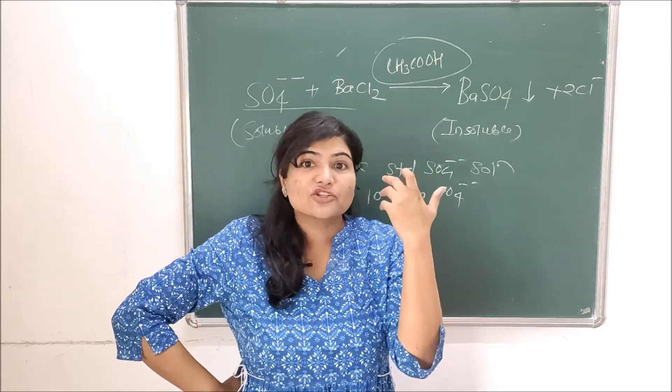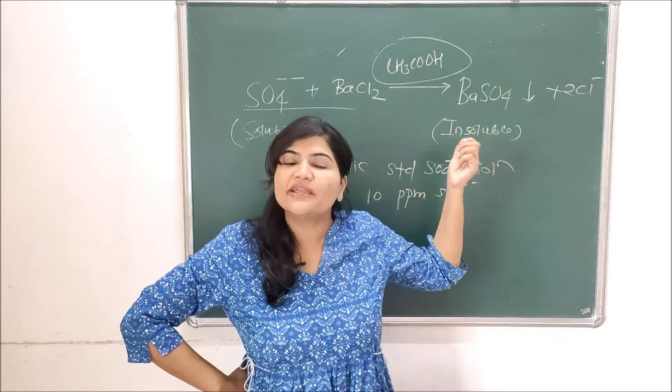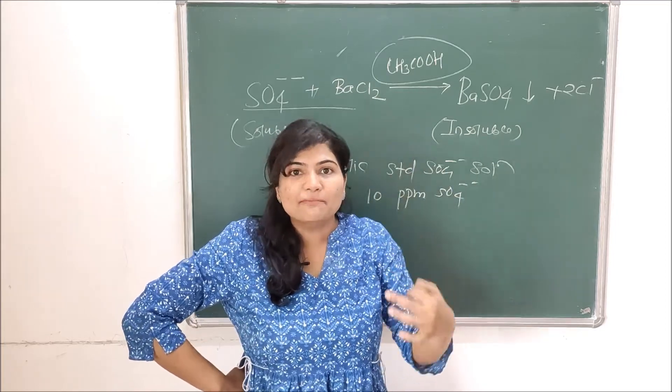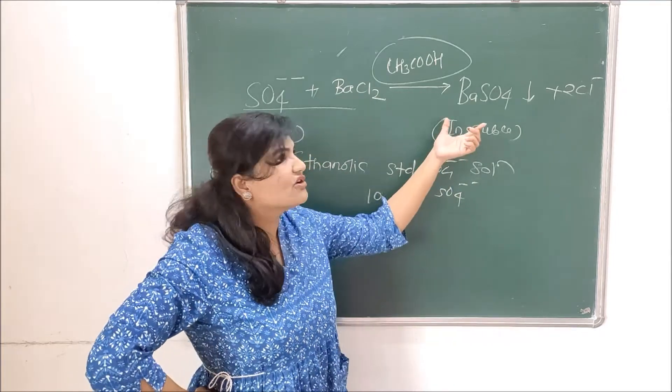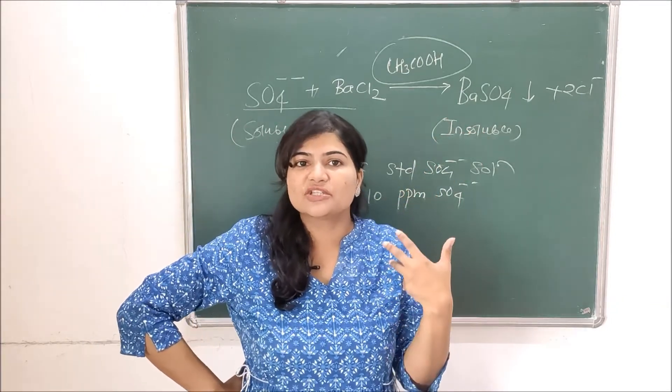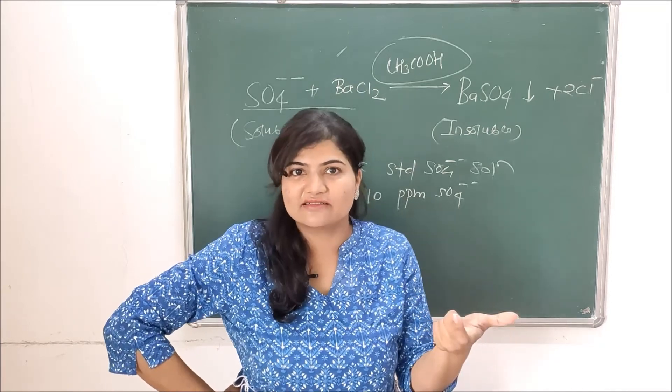So initially the concentration is taken such that the ionic product of barium sulfate is exceeded. It actually gives you presence of some amount of barium sulfate initially which acts as a seed for complete and rapid precipitation of barium sulfate. By seeding, the process of precipitation happens at a faster pace and on a complete level.